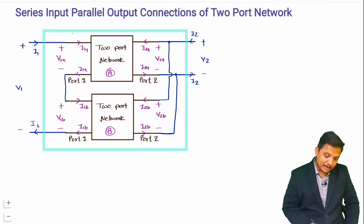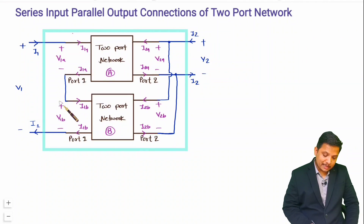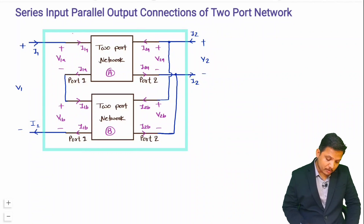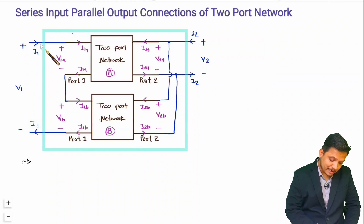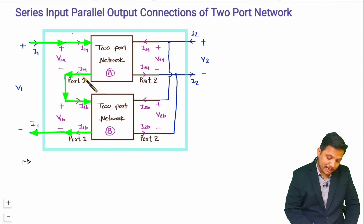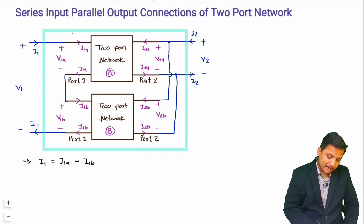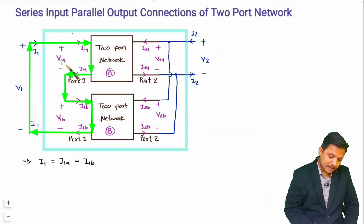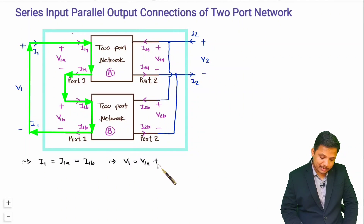Now I will derive the relation of the equivalent two-port network for this series input parallel output connection. We need relations of voltage and current as per the given connection. At the input we have series connections, so currents are the same: I1 equals I1A equals I1B. Applying KVL at the input side, V1 equals V1A plus V1B.